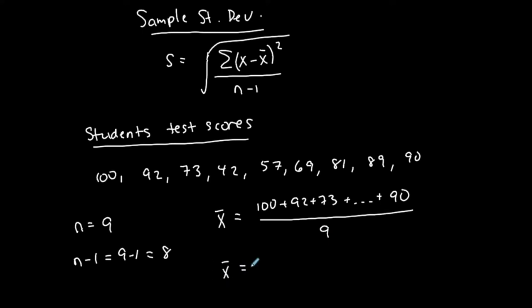Okay, I'm going to plug that in. So I'm going to do 100 plus 92 plus 73 plus 42 plus 57 plus 69 plus 81 plus 89 plus 90. And that is 693. That's my numerator. And I'm going to divide that by 9. 693 divided by 9 is actually 77. So I got a nice number.